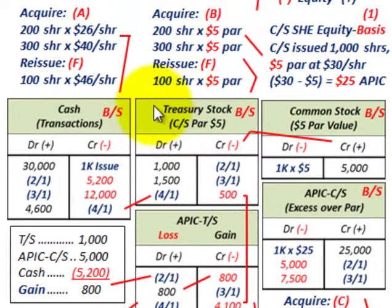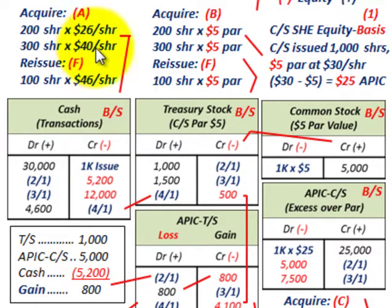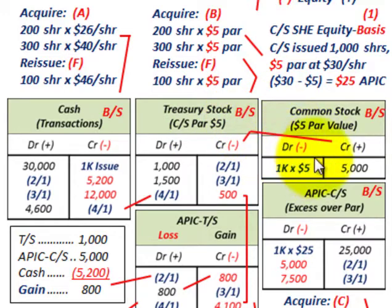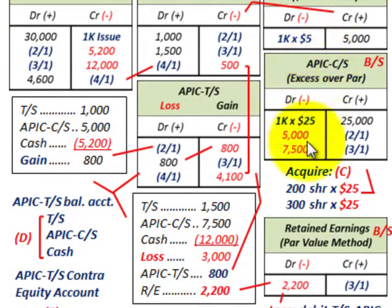For acquiring treasury stock, we have a cash account — either received or paid based on the actual market price. The treasury stock account, a contra equity account, is debited at the par amount based on the par value of the common stock repurchased — in this case $5 per share. Then we move to additional paid-in capital for common stock at $25 per share (step C). Additional paid-in capital for treasury stock becomes a balancing account (step D).